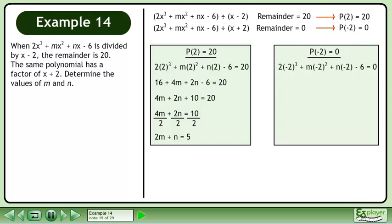Now we'll move on to P(-2) equals 0. Plug in negative 2 for x. Evaluate the powers and multiply. On the left side, negative 16 minus 6 equals negative 22.